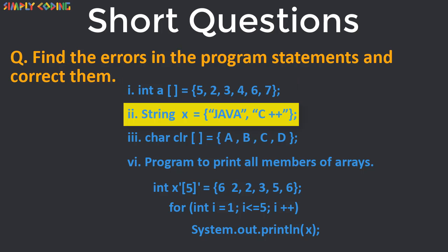In the next statement again a static array is defined. Here the error is that the variable declared is not an array of string. It is just string x so we will add square brackets either before or after x.